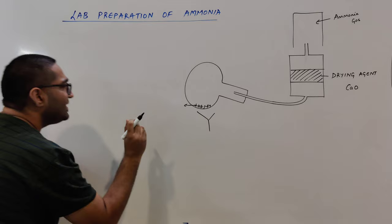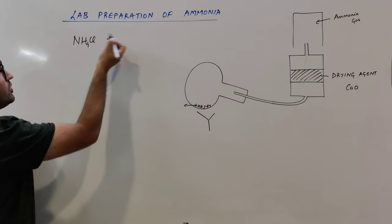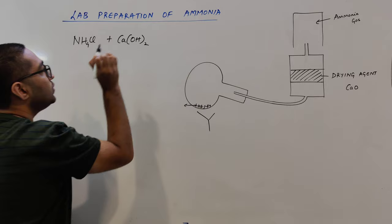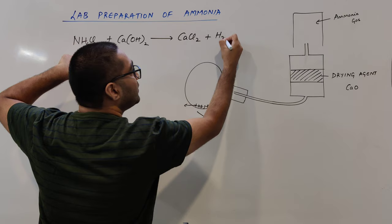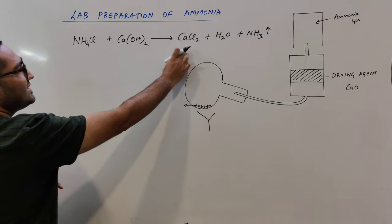We come to know how to do a lab preparation of ammonia. We have taken two reactants: first, ammonium chloride (NH4Cl), and the other one is slaked lime, Ca(OH)2. We can take any ammonium salt with any alkali. The products will be CaCl2, plus water, and then we get ammonia gas.